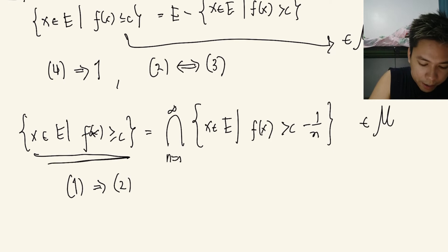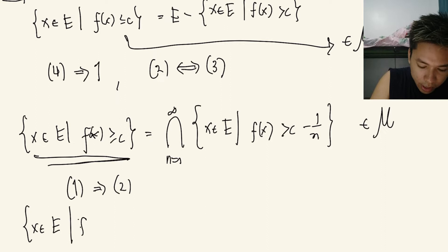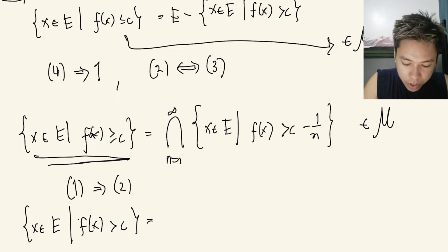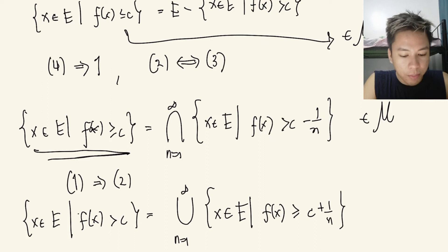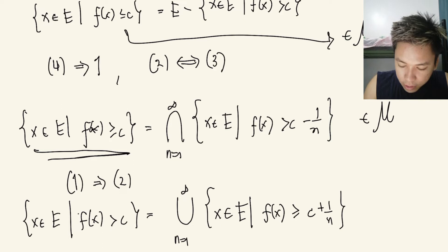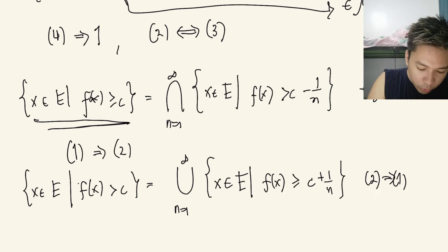Also, the set {x∈e : f(x) > c} can be written as the union of {x∈e : f(x) ≥ c + 1/n} for n from 1 to infinity. Since the union of a countable collection of measurable sets is measurable, this tells us that 2 implies 1, and so 1 if and only if 2. Therefore, 4 if and only if 1 if and only if 2 if and only if 3.